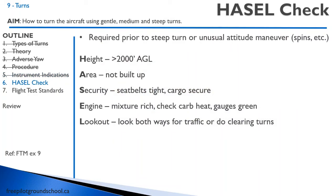Let's talk about a safety item — the HASEL check. We do a HASEL check before any steep turns, unusual attitudes, stalls, spins, or slow flight. HASEL stands for Height, Area, Security, Engine, and Lookout. For height, we generally want to be able to recover above 2,000 feet AGL. Area — we don't want to be over a built-up area or an airport. Security — ensure seat belts are done up and check the cargo compartment. Engine — mixture rich, check carburettor heat, and confirm engine gauges are in the green. Then take a thorough lookout, checking both ways for traffic or doing clearing turns.